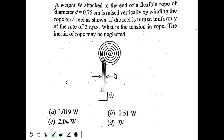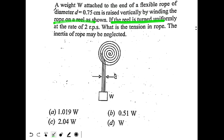A weight W attached to the end of a flexible rope of diameter d equal to 0.75 cm is raised vertically by winding the rope on a reel. If the reel is turned uniformly at a rate of 2 revolutions per second, what is the tension in the rope? The inertia of the rope may be neglected.